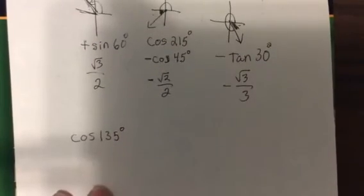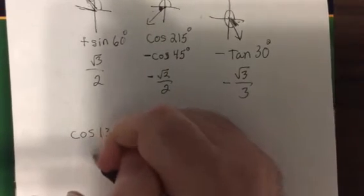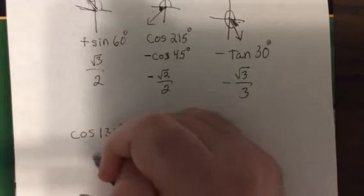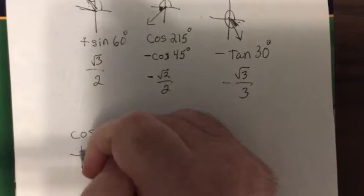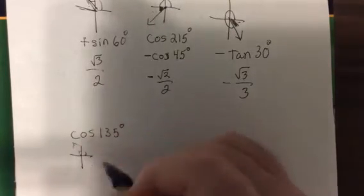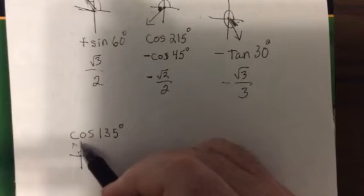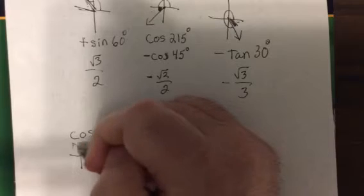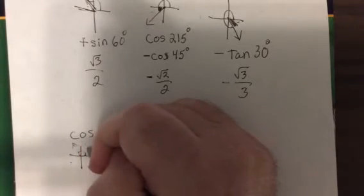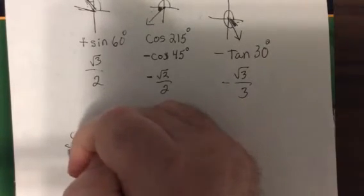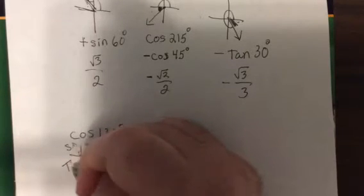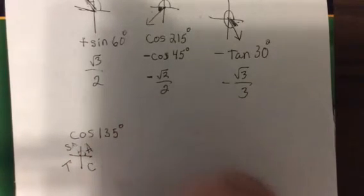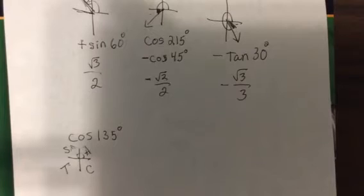Okay, so cosine of 135. You would say, it's in the second quadrant, cosine is negative. Now one way you can remember is all students take calculus. All of them are positive, sine and cosecant, tangent, and cosine. That's how I was taught to remember. But cosine is negative because X is negative and R is positive.